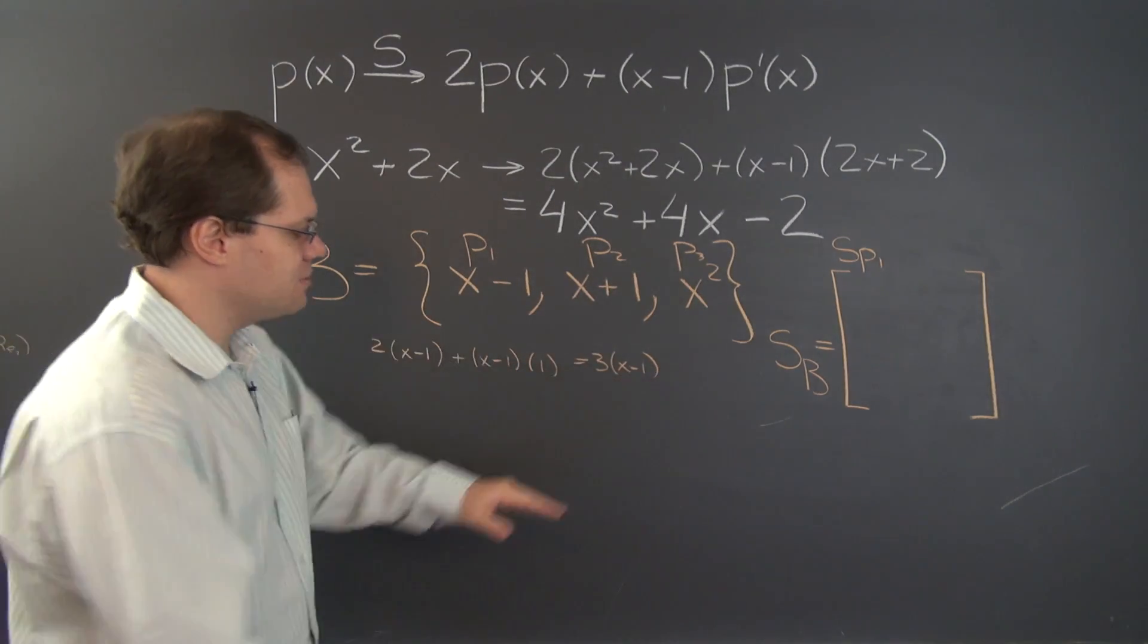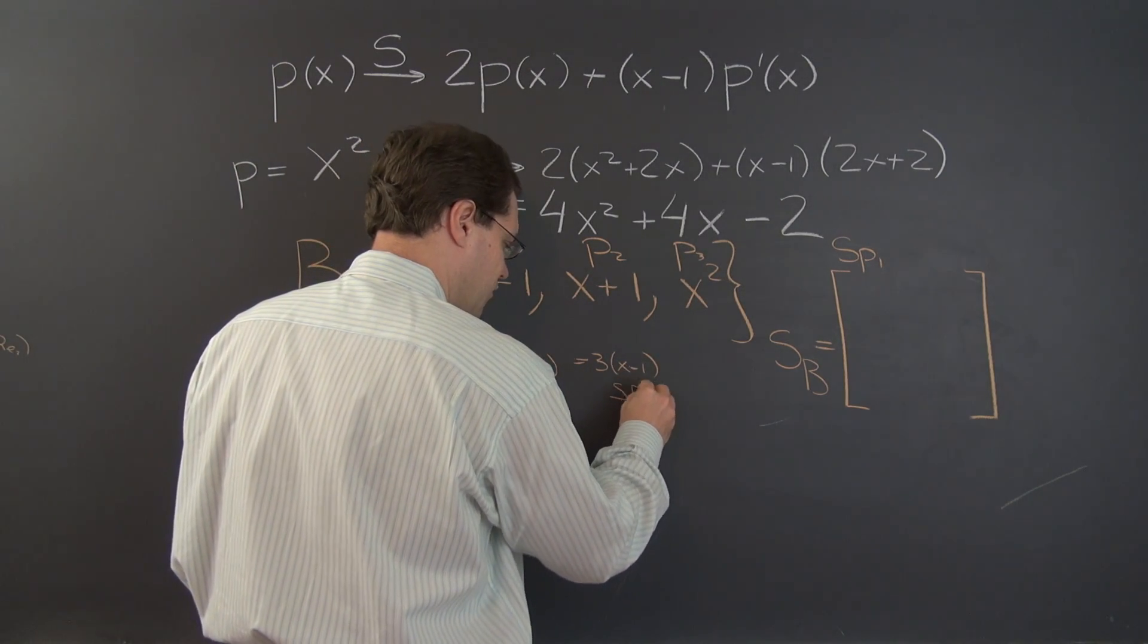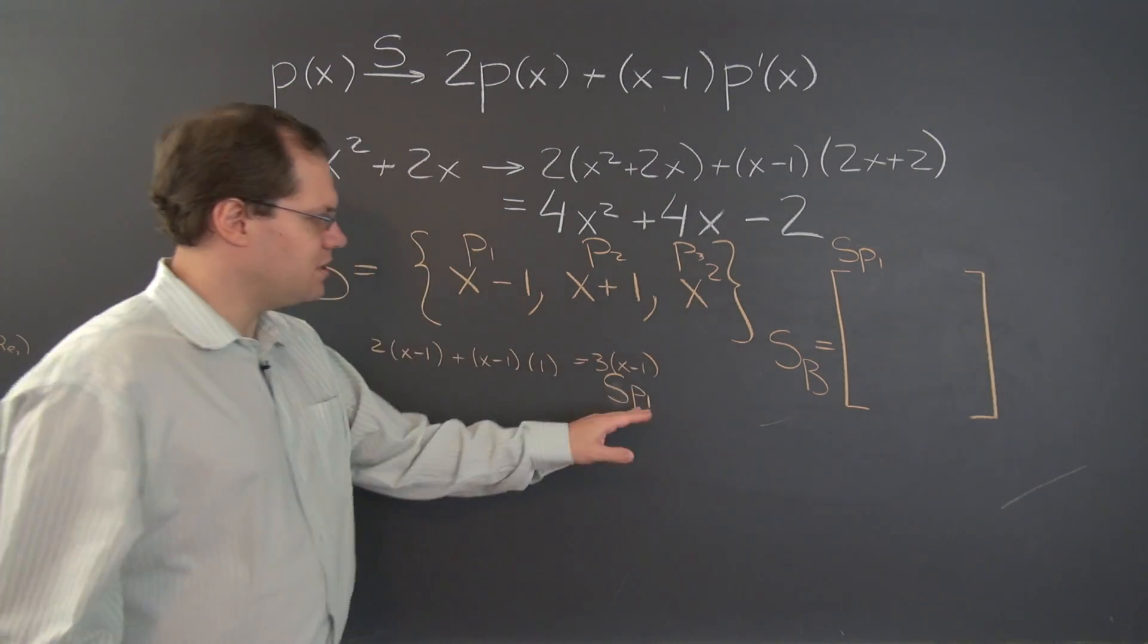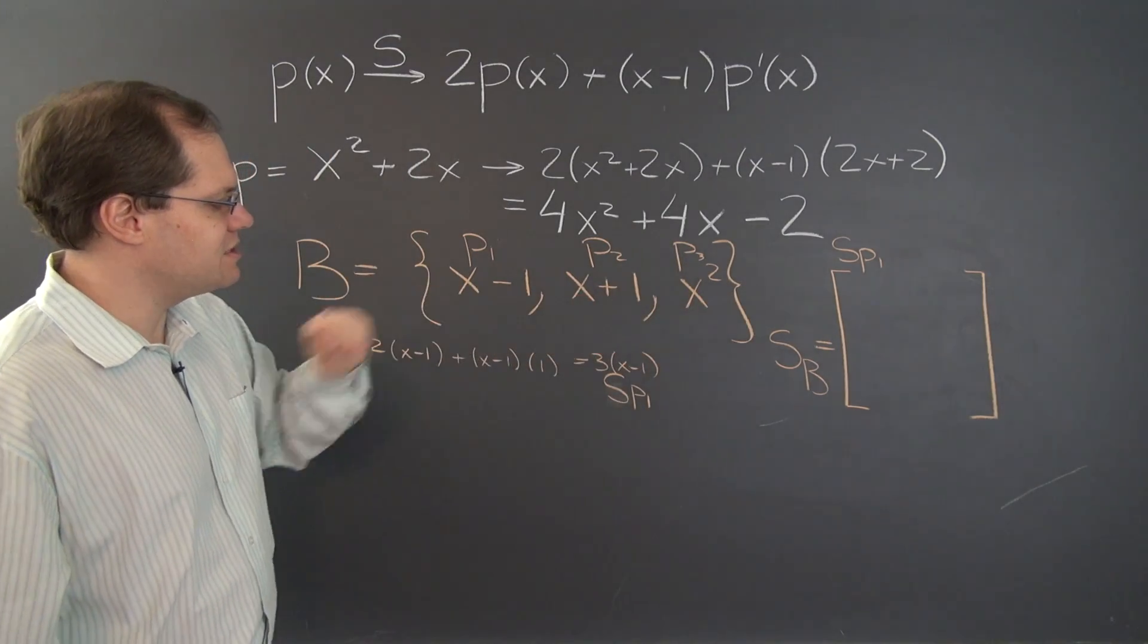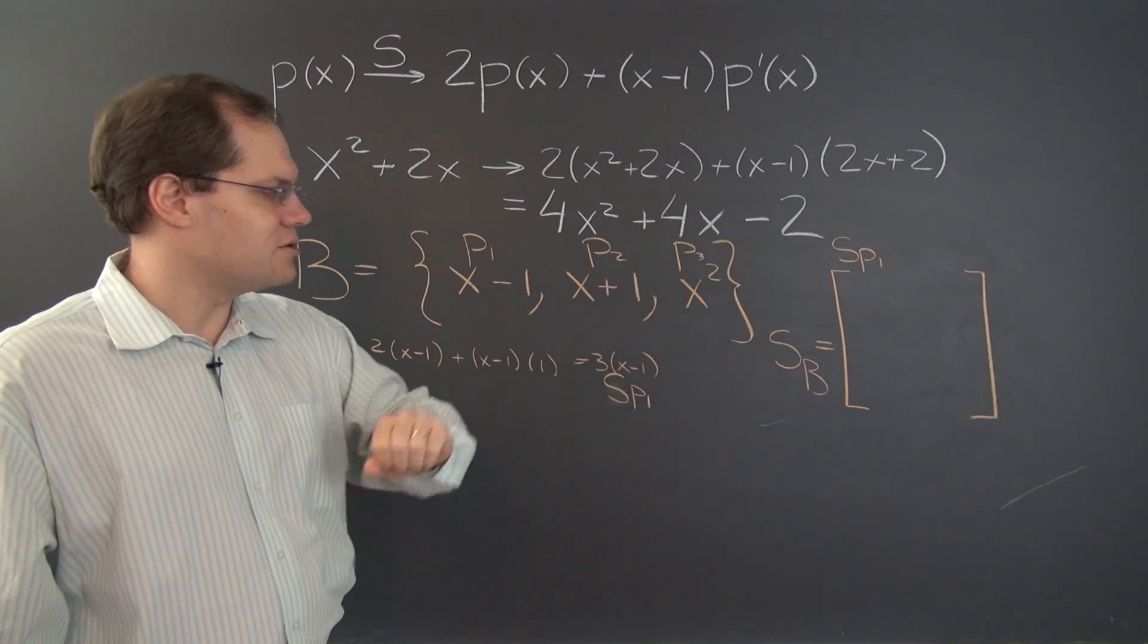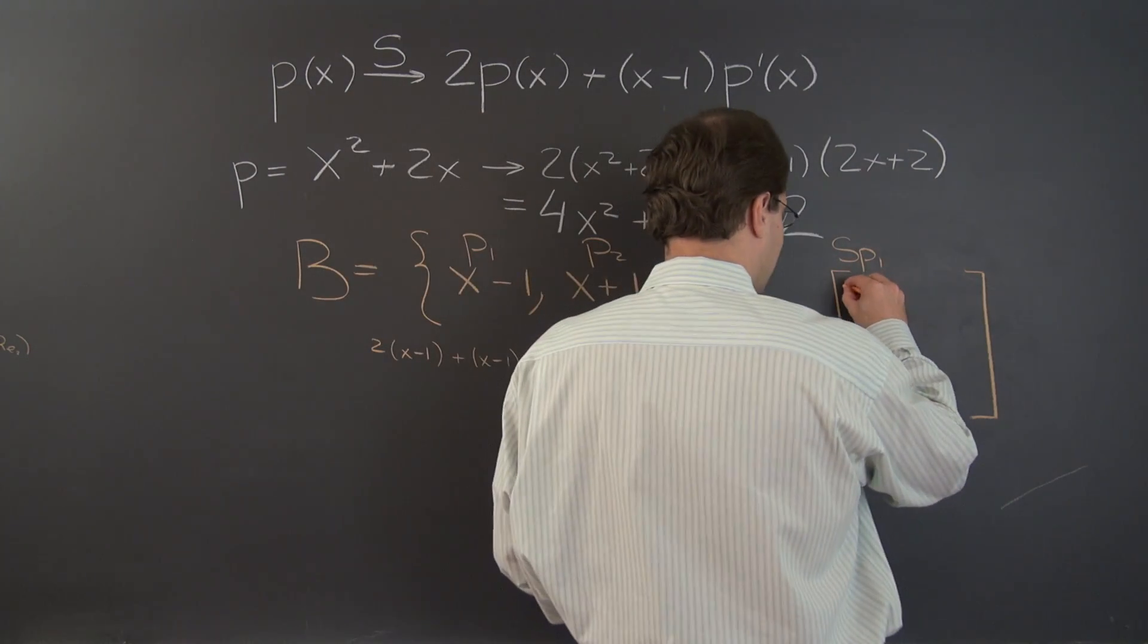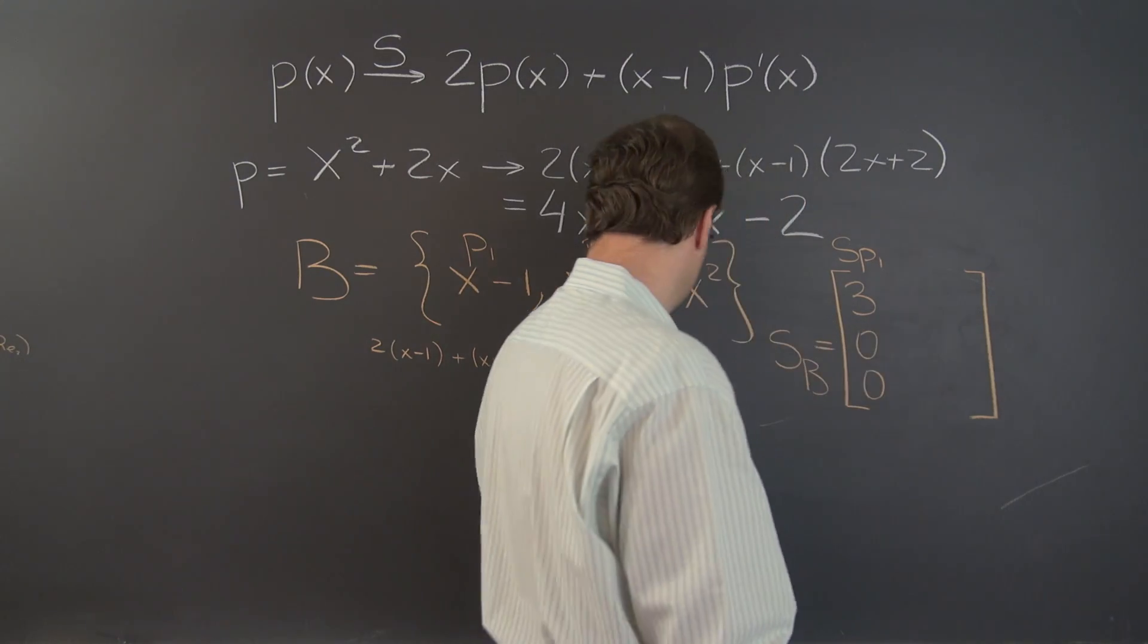And now we have to decompose the result. This right here is S of P1, and now S of P1 needs to be decomposed with respect to the same basis. And of course the coefficients are 3, 0, 0. And that's the first column of this matrix. 3, 0, 0. Great.